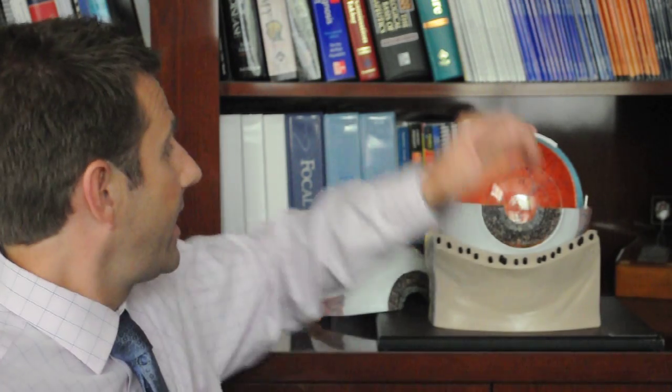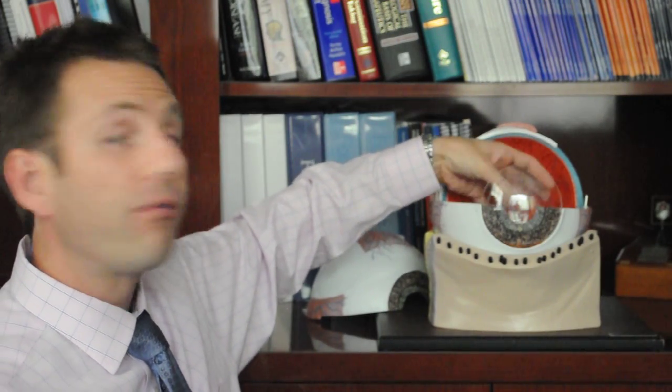As time goes by, this gel weakens and becomes a little bit more fluid and also shrinks down. When it shrinks down, part of it can pull away from the retina at the back part of the eye and then float more freely in the back part of the eye.